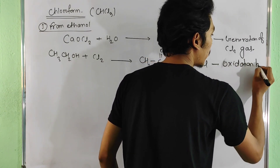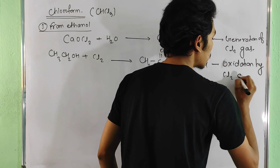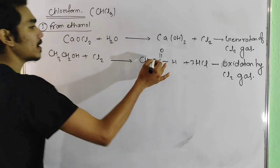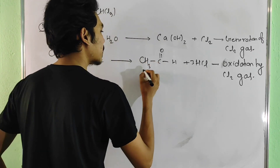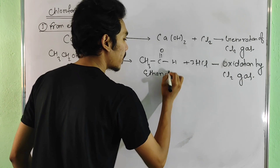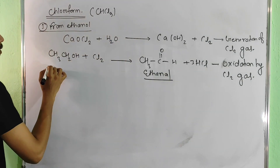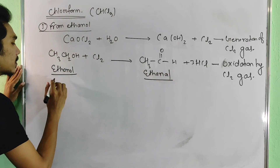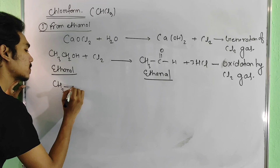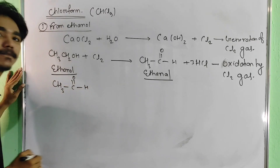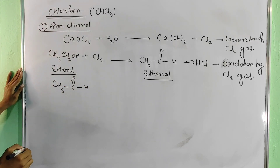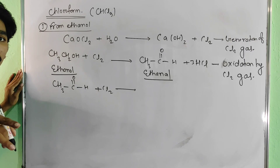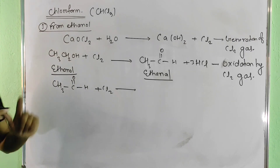Oxidation is carried out by chlorine gas Cl2. This produces acetaldehyde — CH3CHO — from ethanol. The CCl3 group with a carbonyl bond is formed. This is followed by further chlorination by chlorine gas.